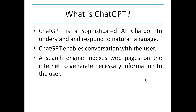ChatGPT is available online and it can also be customized to a particular application for specific needs. It uses an artificial intelligence mechanism to generate responses by understanding natural language queries, enabling real-time conversation with the user. When you pass a query to a ChatGPT engine, it searches for information by analyzing indexed web pages on the internet.